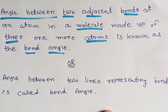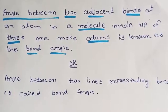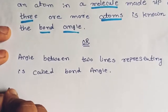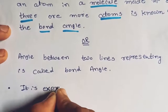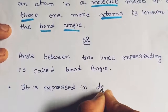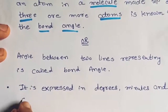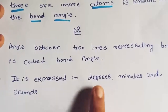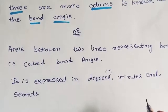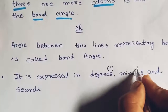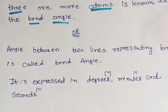Now, what does bond angle tell us? From bond angle you can also know the 3D arrangement of a molecule — how the molecule is arranged. Bond angle is measured and expressed in degree, minute, and second. Degree is written as a superscript circle symbol, minute uses one inverted comma, and second uses double inverted commas.